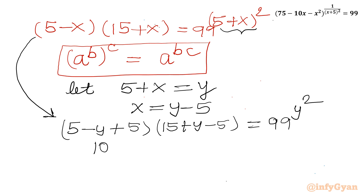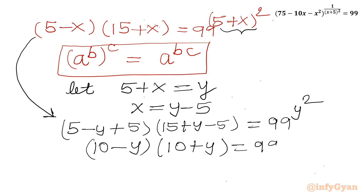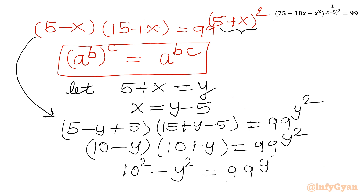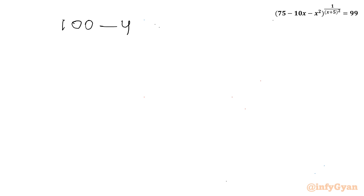So we have (10 minus y) times (10 plus y) equals 99 raised to the power y². Using the difference of squares identity, (a+b)(a-b) = a² minus b², this becomes 10² minus y², which is 100 minus y², equal to 99 raised to the power y².